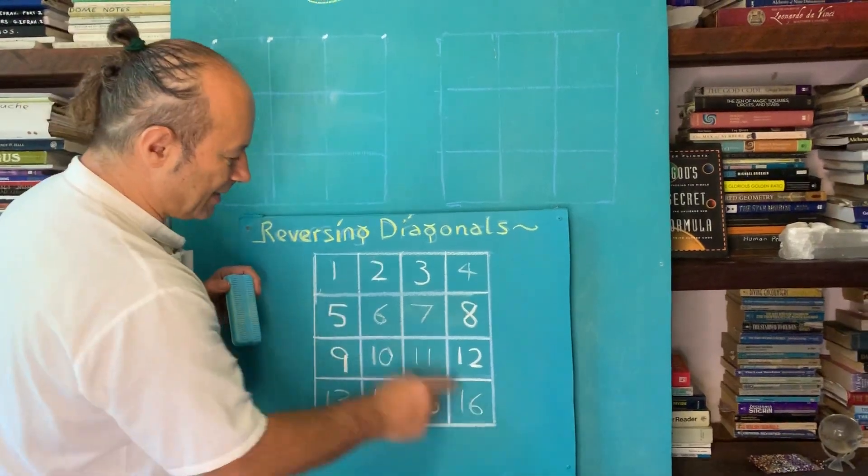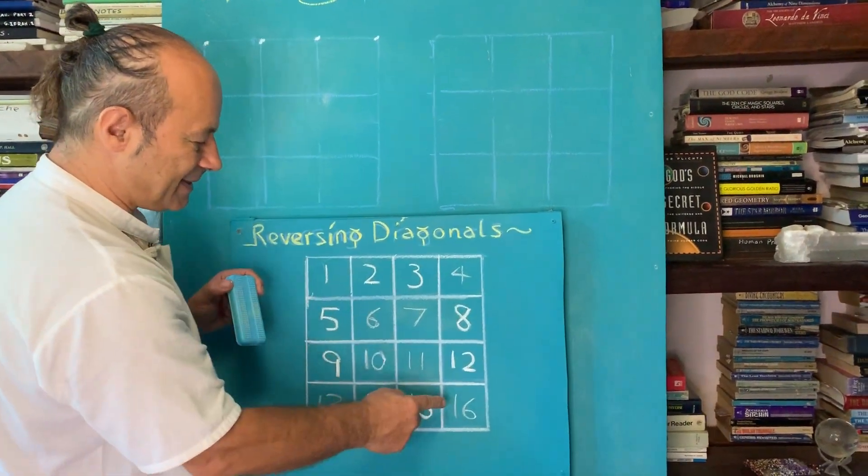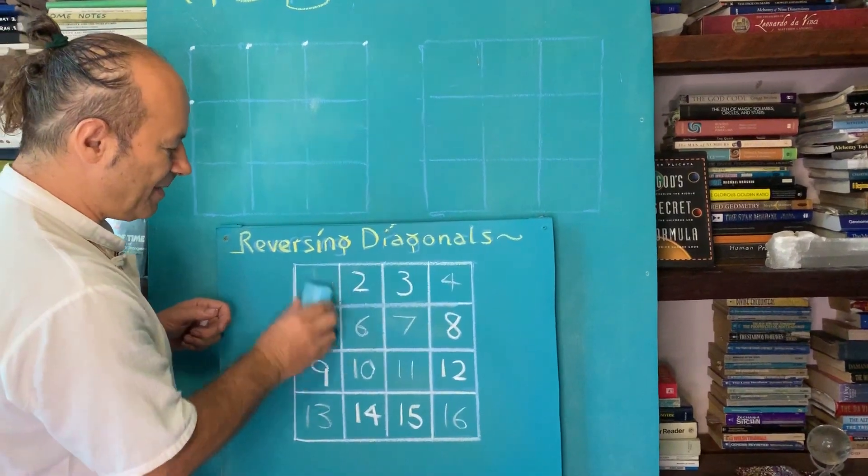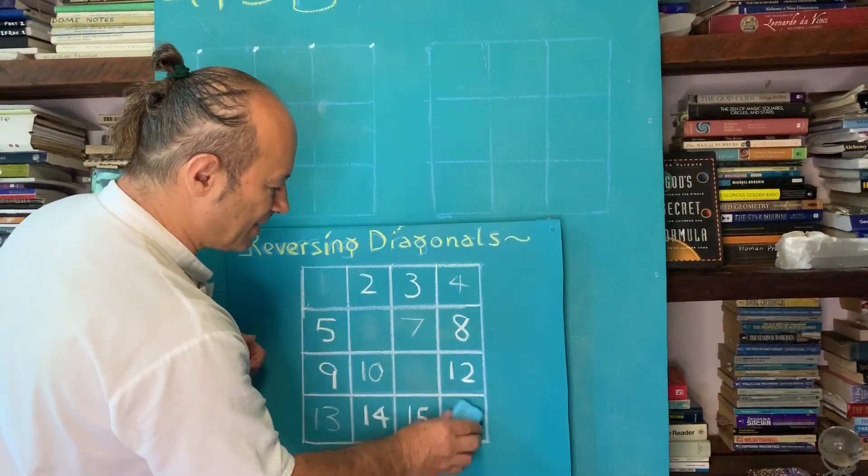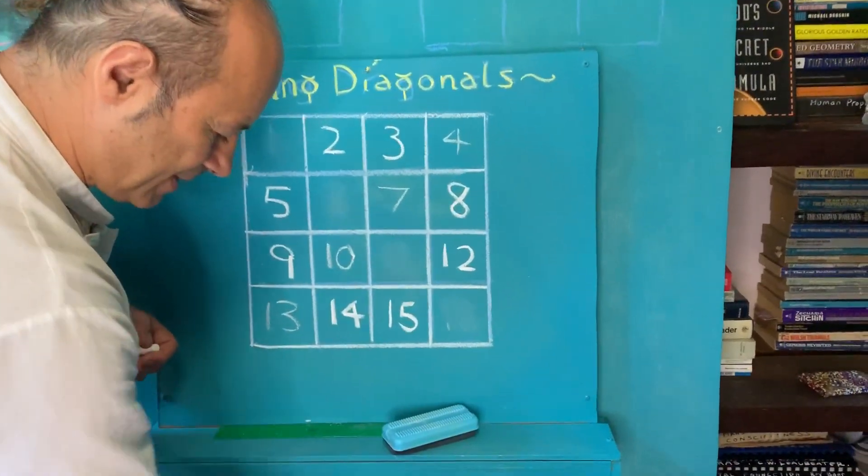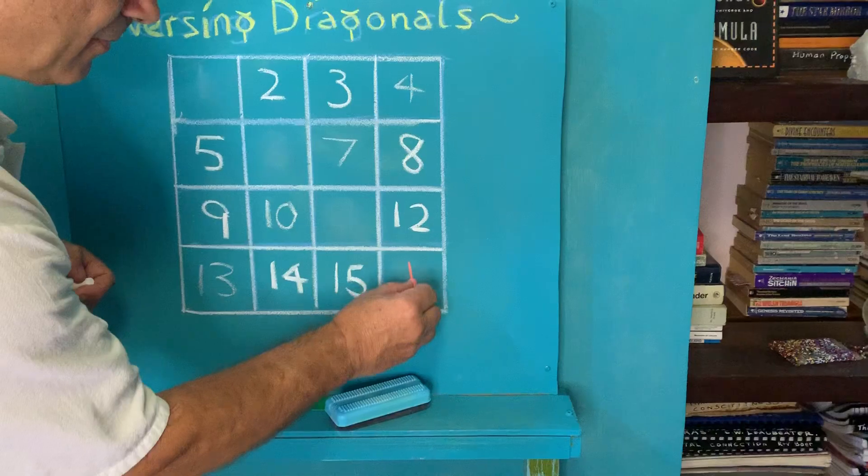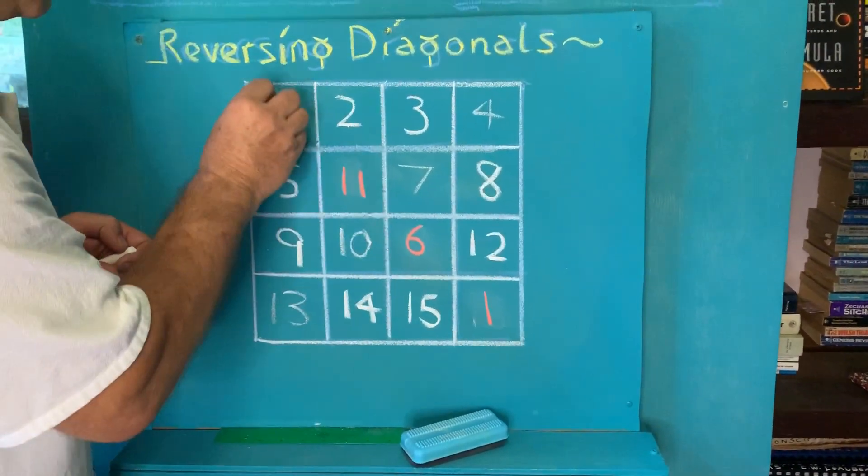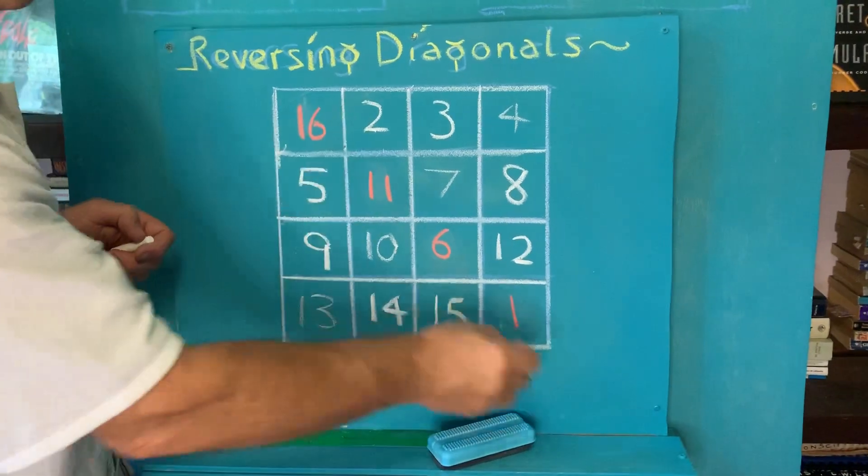Let's take a note of this diagonal. It's 1, 6, 11, 16. I'm going to rub that out and reverse it. I might even write it in pink here: 16, 11, 6, 1. So I reversed it.